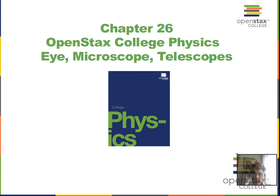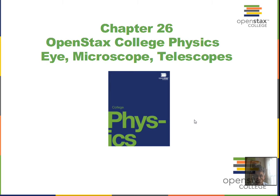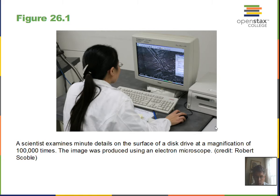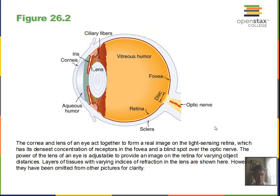Professor Clements here as we again consider optics. Chapter 26 of OpenStax College Physics discusses the eye, microscopes, and telescopes. In this video we will just concentrate on the eye, so look for the other videos for microscopes and telescopes. We have a need in our technological society to see small objects — that happens with our eye. A microscope will help us with that, and a telescope helps us see details on dim objects.